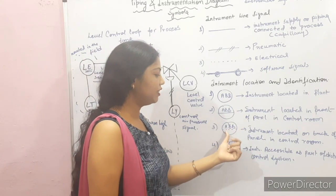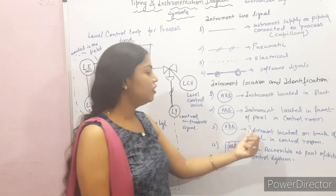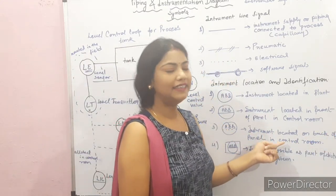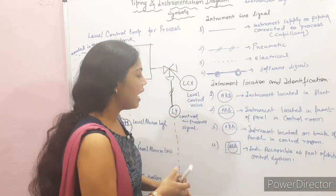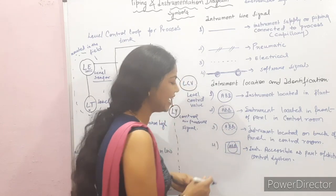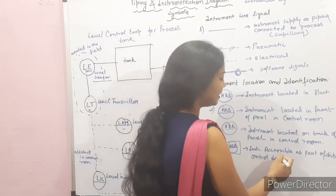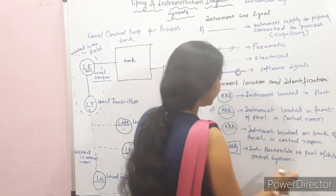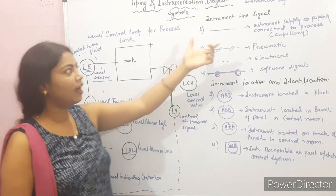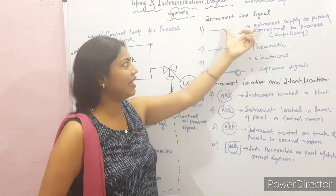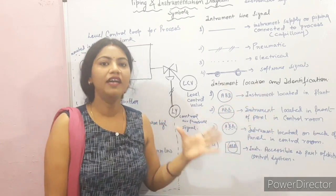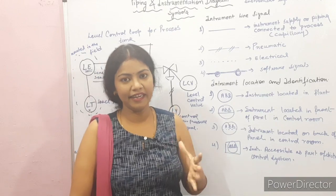If there is a dotted horizontal line inside the circle, the instrument is located on the back of the panel in the control room. If we have a rectangular shape with a circle and a horizontal line, the instrument is accessible as part of a distributed control system. So these are the things we have seen about lines, instrument line signals, and location and identification of instruments.